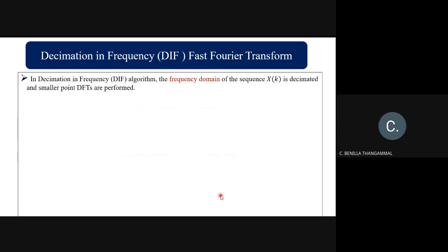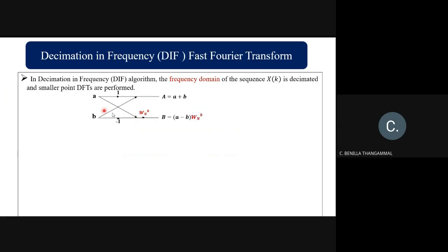The basic structure of the DIF FFT algorithm is given as A and B, and the twiddle factor will be placed after the structure. The output A and B is formed by: A equals a plus b, and B equals a minus b multiplied by the twiddle factor. So one result is the addition of the two inputs and the second is the subtraction along with the twiddle factor.